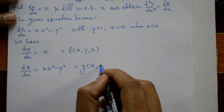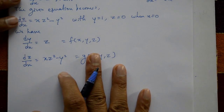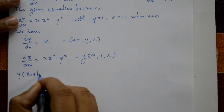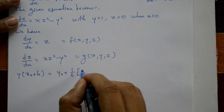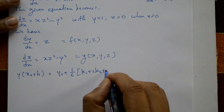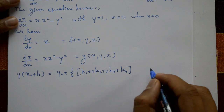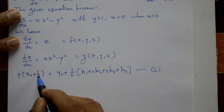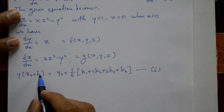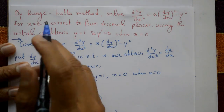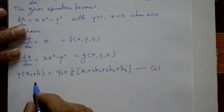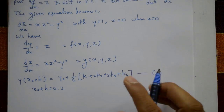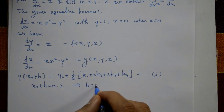Using the Runge-Kutta method, the formula is y(x₀ + h) = y₀ + (1/6)(k1 + 2k2 + 2k3 + k4). We need to find k1, k2, k3, k4. Since x₀ + h = 0.2 and x₀ = 0, we get h = 0.2.